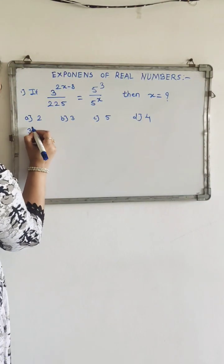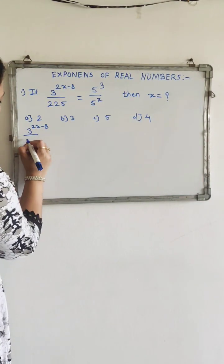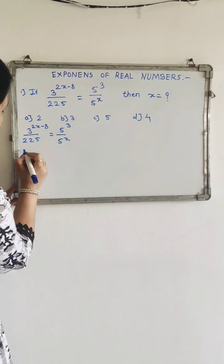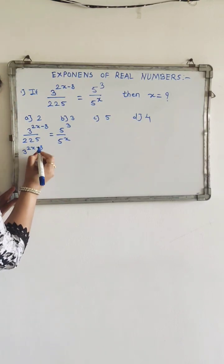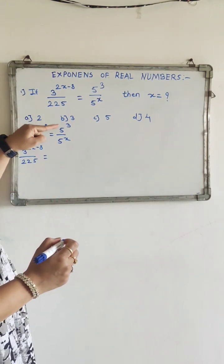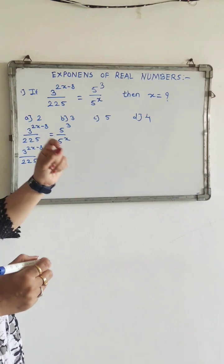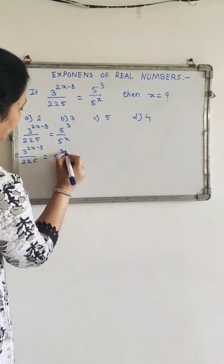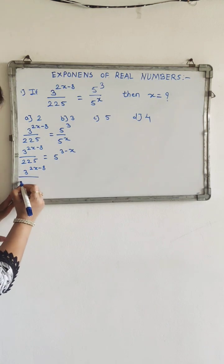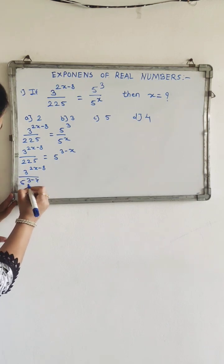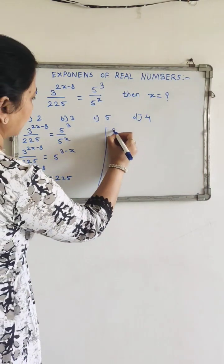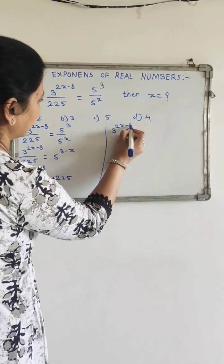If 3 raised to power 2x minus 8 divided by 225 is equal to 5 raised to power 3 upon 5 raised to power x. You can subtract only exponents if the base is the same, so this becomes 5 raised to power 3 minus x. Then 3 raised to power 2x minus 8 divided by 5 raised to power 3 minus x is equal to 225.